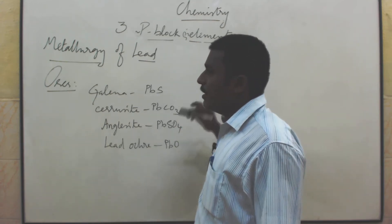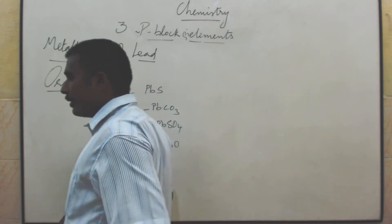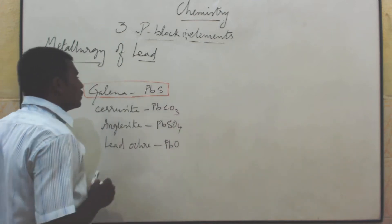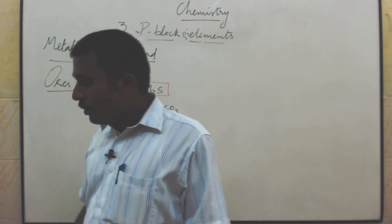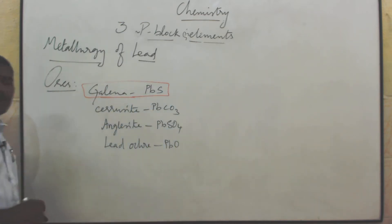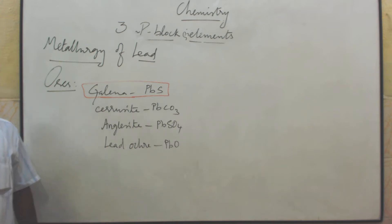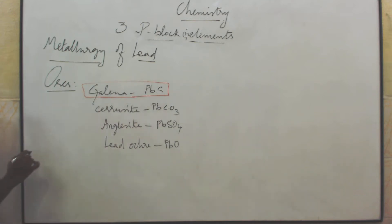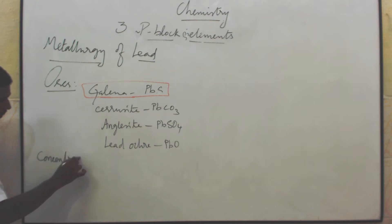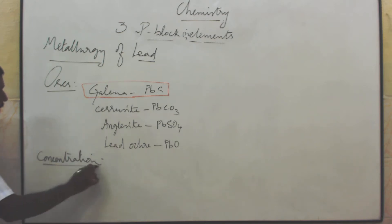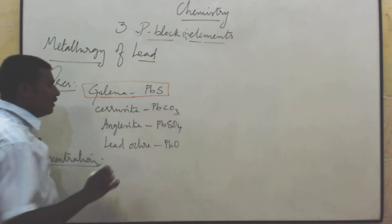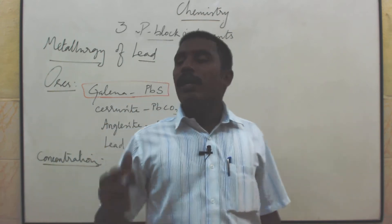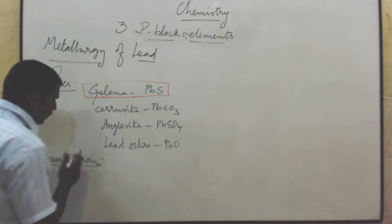Lead is extracted from its sulfide ore, namely galena. The extraction process begins with concentration. Since galena is a sulfide ore, the suitable concentration method is froth flotation. The powdered galena is concentrated by the froth flotation process.